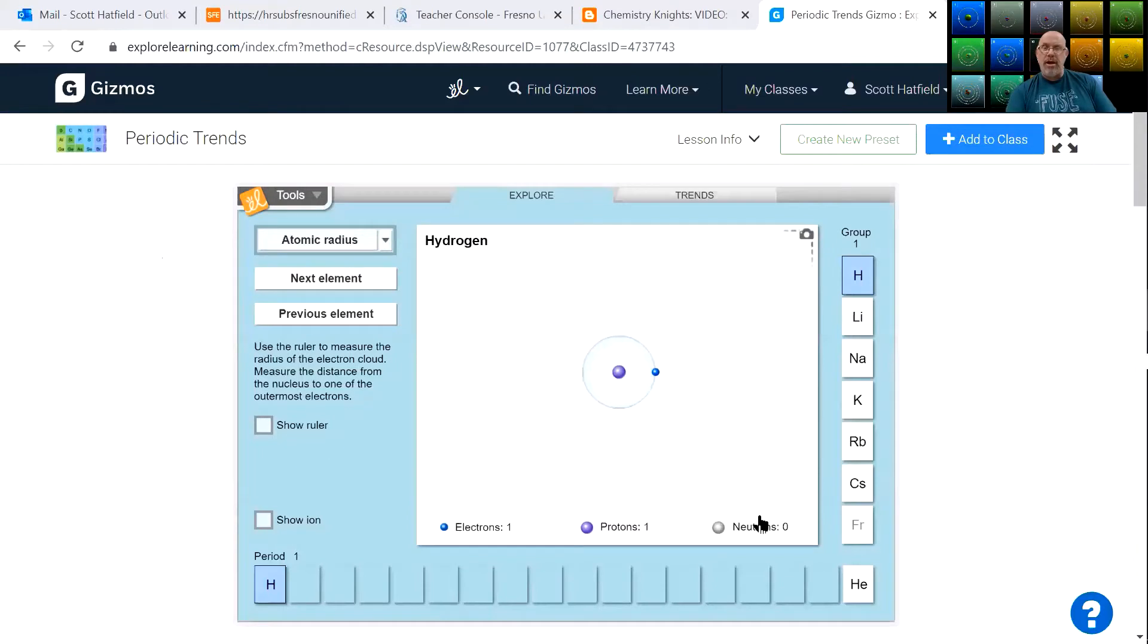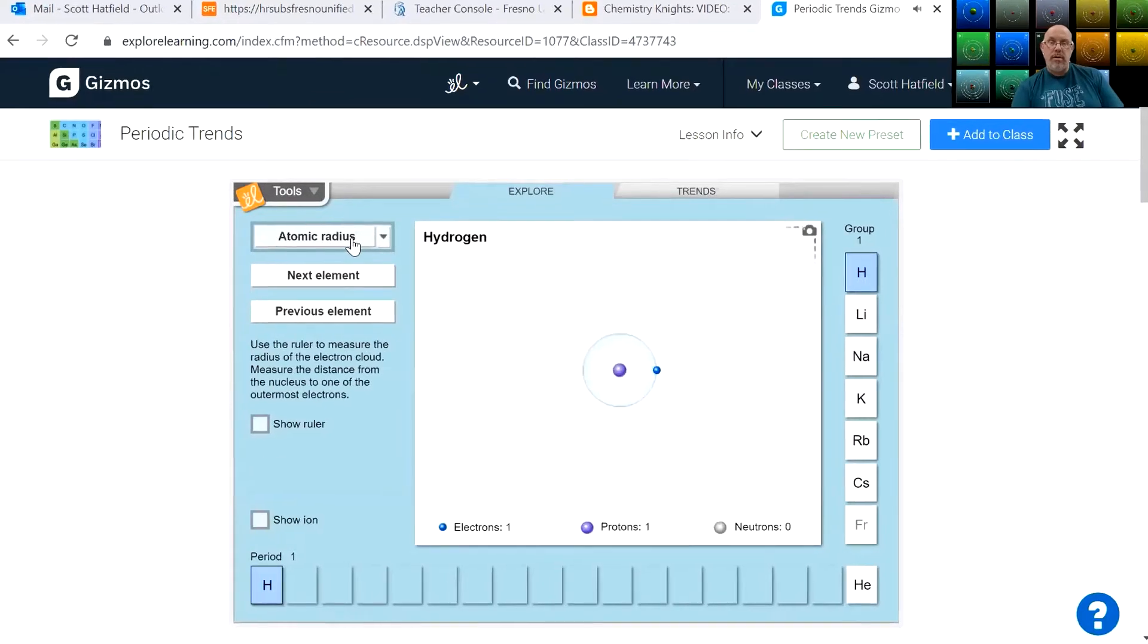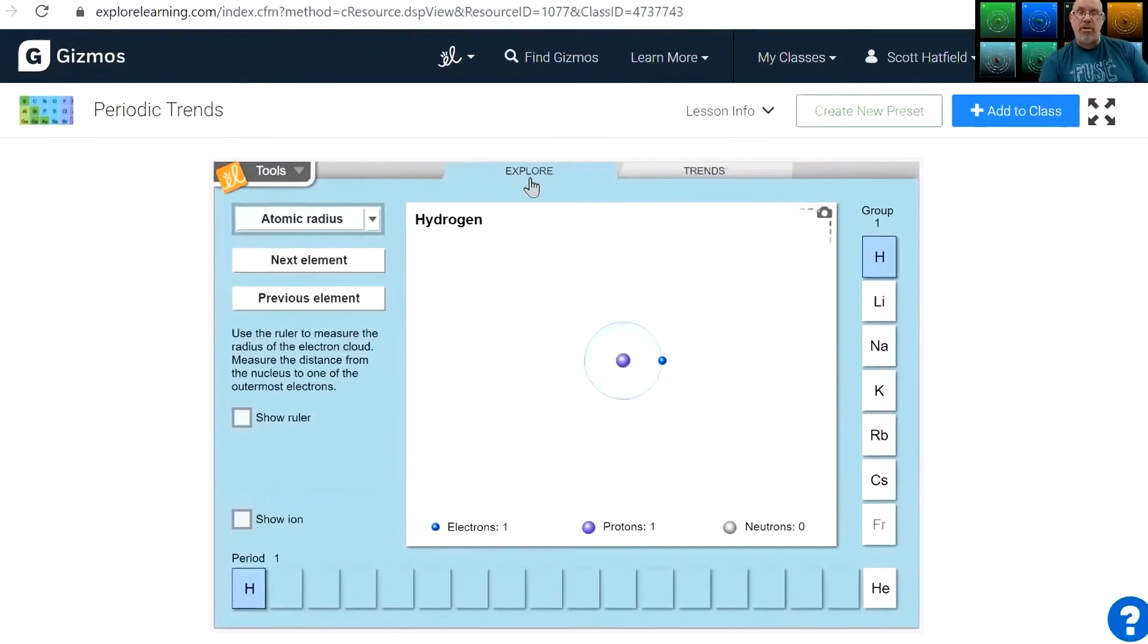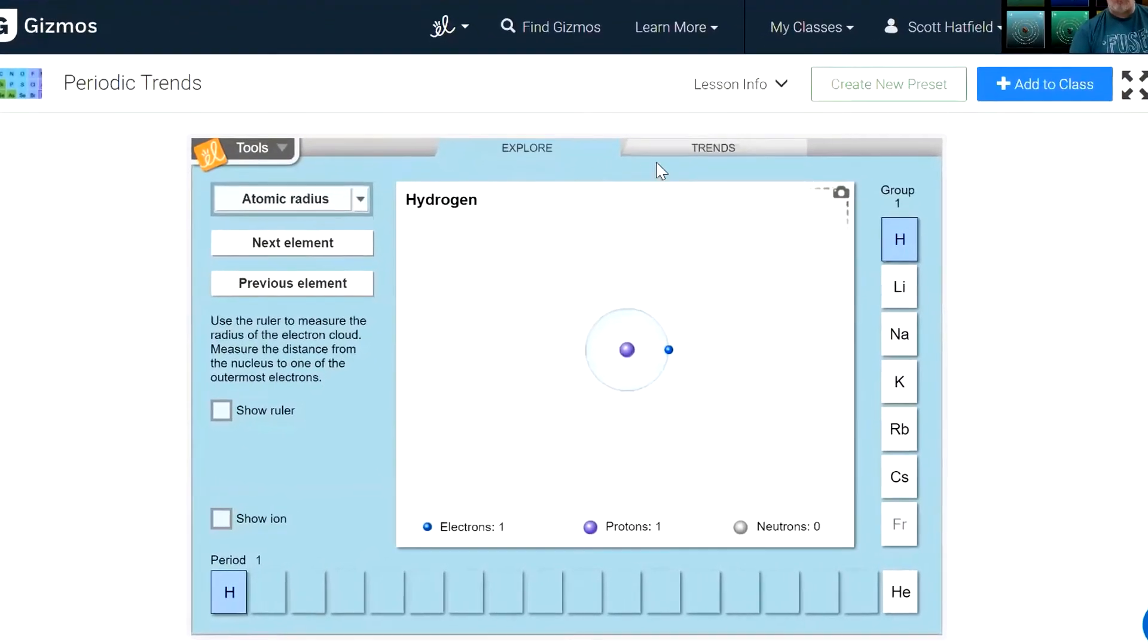We're going to begin by looking at the atomic radius, some things we can do with that. We will also have activities that focus on ionization energy and on electron affinity. From time to time, instead of working on this page where it says Explore, we may go and look at the trends.